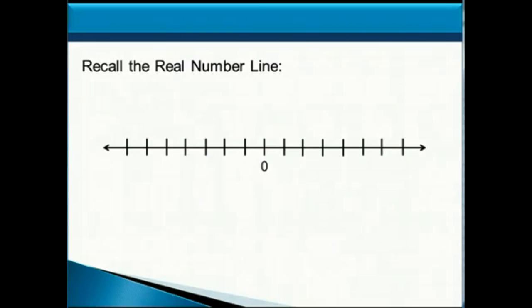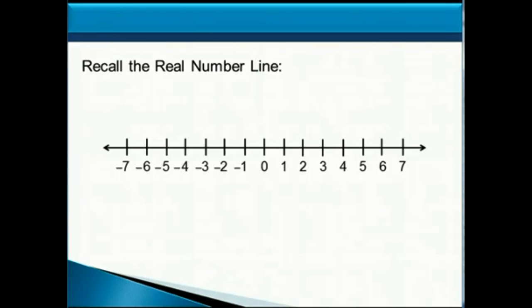So first, we call the real number line. On the real number line, we have zero in the center, and then to the right of zero, we have positive numbers, and to the left of zero, we have negative numbers.